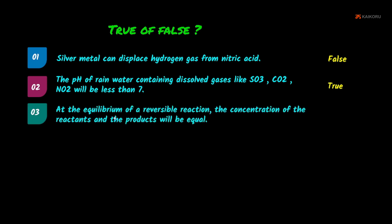Third: at the equilibrium of a reversible reaction, the concentration of reactants and products will be equal. At equilibrium the rate of reaction is equal, but the concentrations of reactants and products differ. So this statement is False.